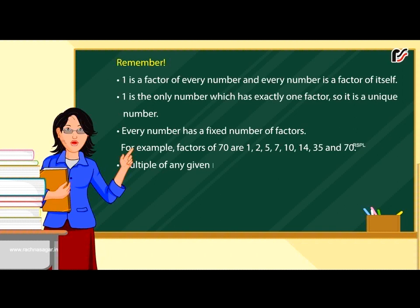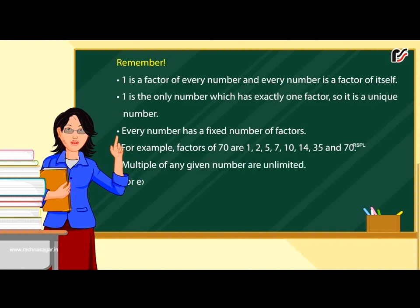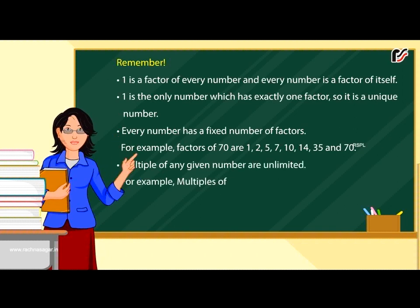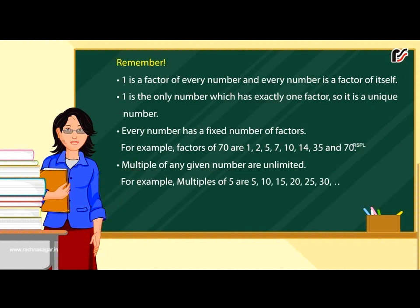Multiples of any given number are unlimited. For example, multiples of 5 are 5, 10, 15, 20, 25, 30, etc.